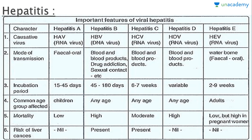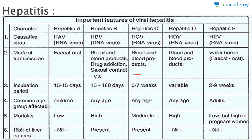Now we study the comparative characters of hepatitis A, B, C, D, and E viruses. Only hepatitis B virus is a DNA virus; all other hepatitis viruses are RNA viruses. Regarding mode of transmission: hepatitis A spreads mainly through the fecal-oral route; B spreads through blood, blood products, drug addiction, and sexual contacts; C transmits through blood and blood products only; D also through blood and blood products; and E is waterborne or fecal-oral. Incubation periods: A is 15 to 45 days, B is 45 to 180 days, C is six to seven weeks, D is variable, and E is two to nine weeks.